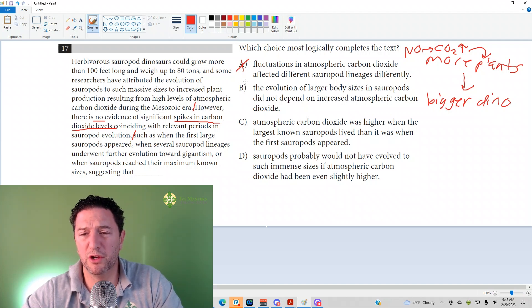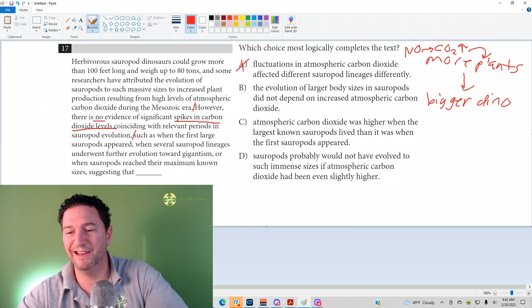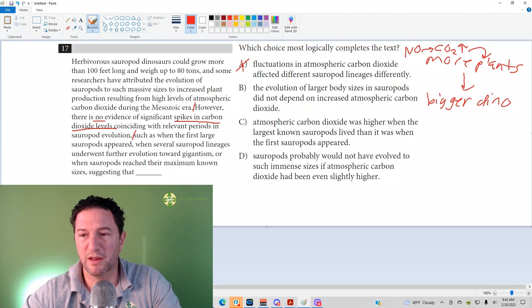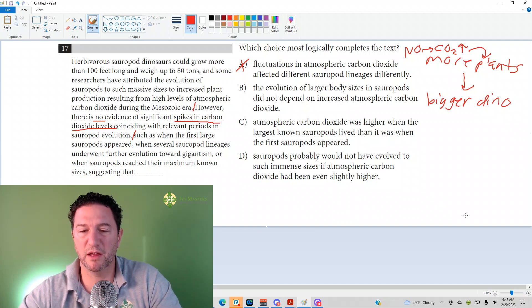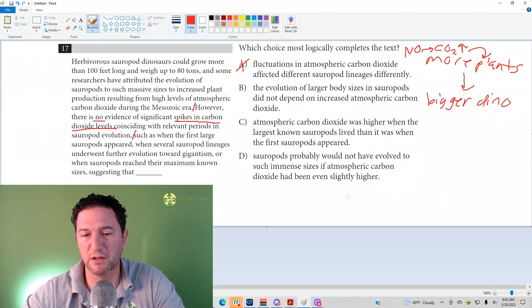Answer choice B: The evolution of larger body sizes in sauropods did not depend on increased atmospheric carbon dioxide. Yeah. So the passage says that there are bigger dinosaurs, 100 feet long, 80 tons. But if there was no spikes in carbon dioxide levels, then you cannot say that a spike in carbon dioxide level led to a bigger dinosaur. Answer choice B looks like it's our answer.